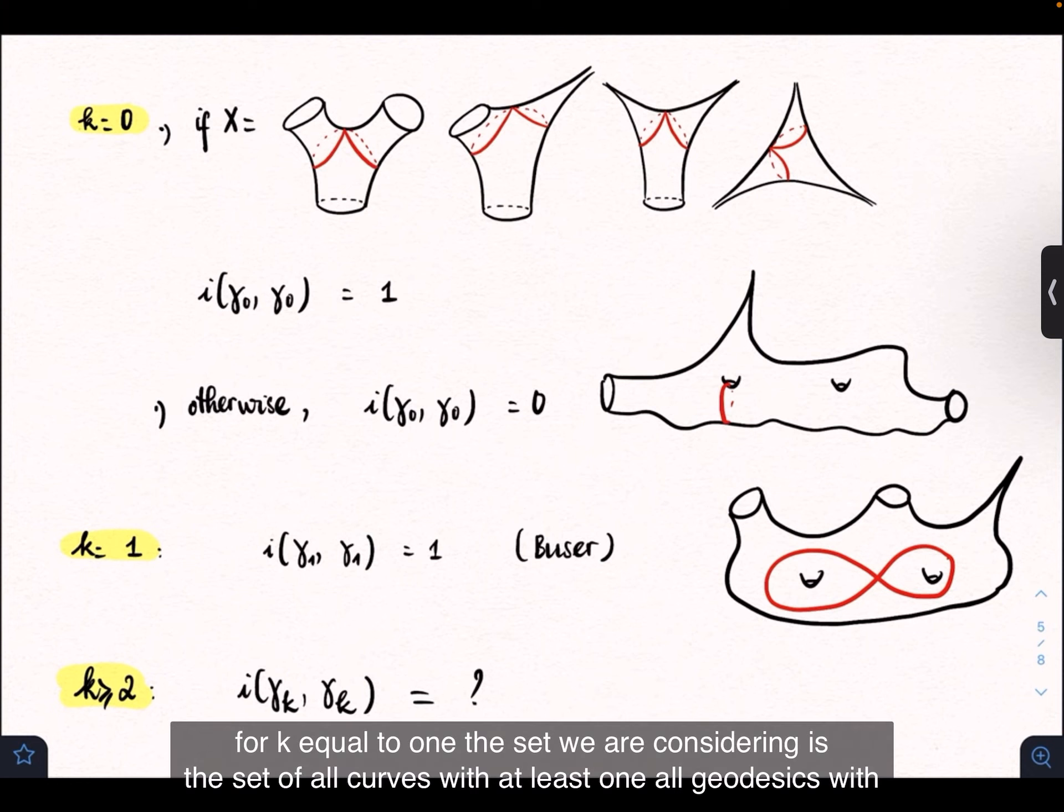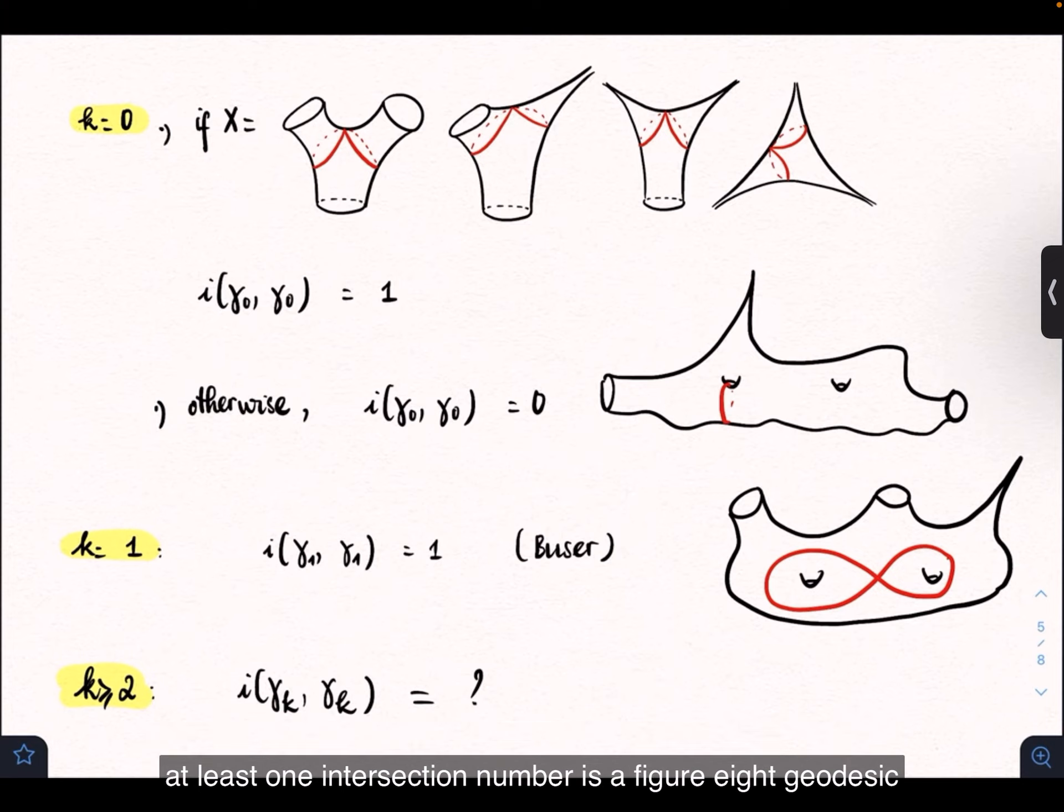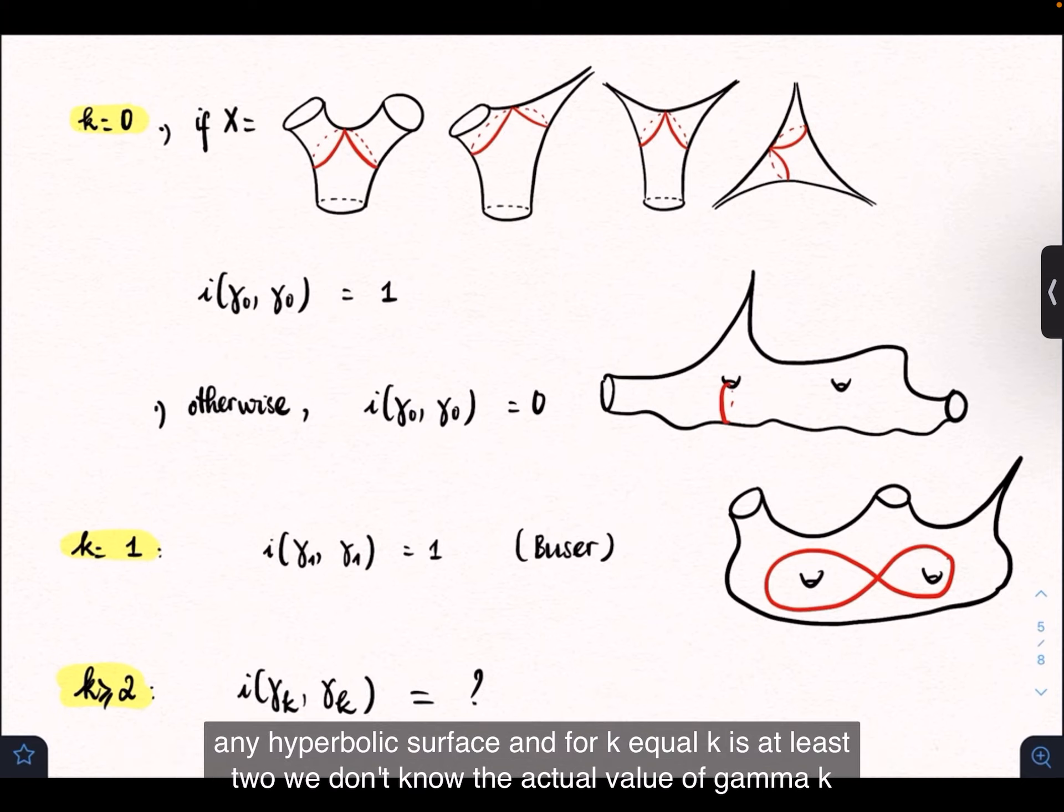For K equal to 1, the set we are considering is the set of all geodesics with at least one self-intersection number. As a result of Basmajian, he proved that the shortest one with at least one intersection number is a figure-eight geodesic, so the self-intersection number is 1. This is true for any hyperbolic surface.